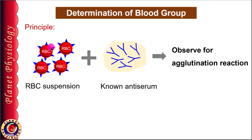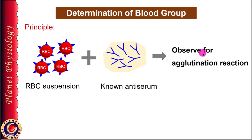From our knowledge of immunity, we know that specific antibodies react with specific antigens. Hence, to determine blood group, the blood sample is mixed with serum containing a known antibody and checked for agglutination reaction. Presence of agglutination indicates the presence of that particular agglutinogen on the RBC.